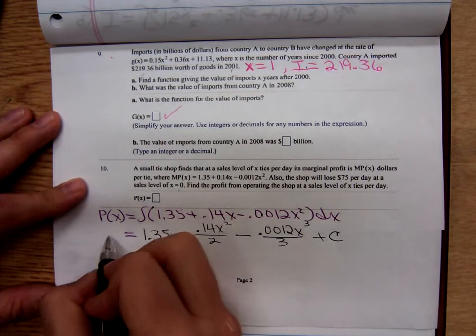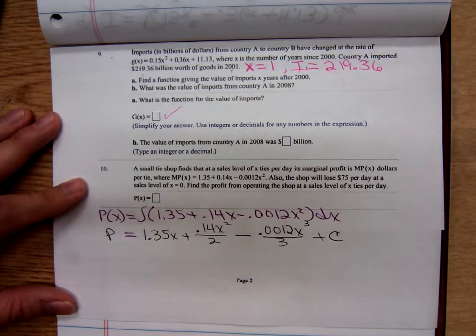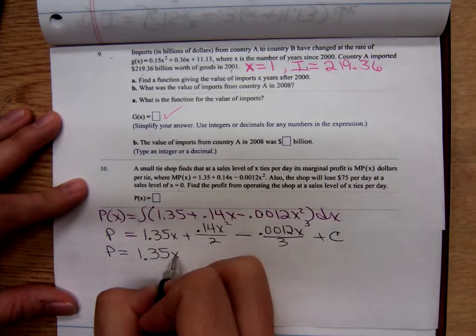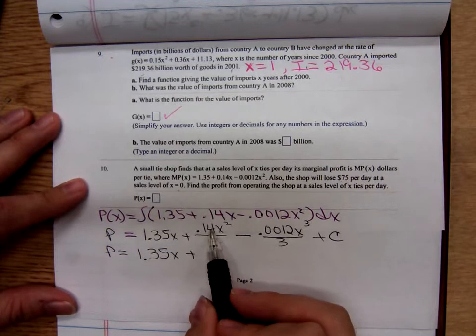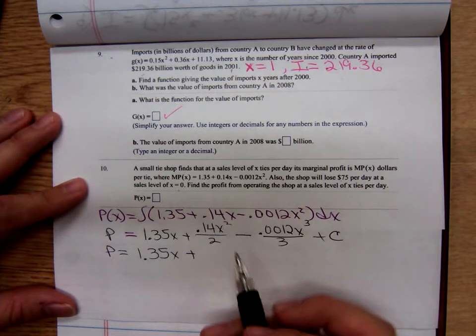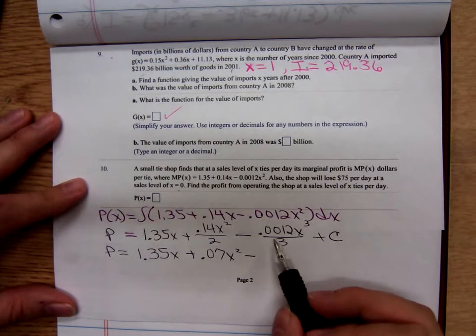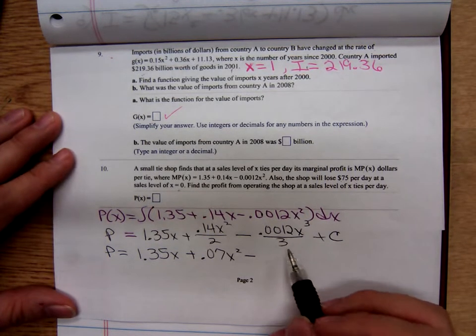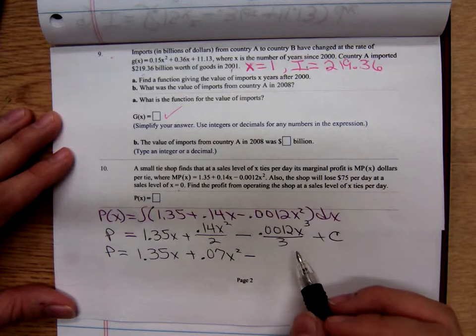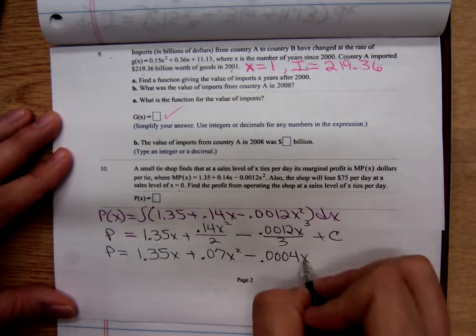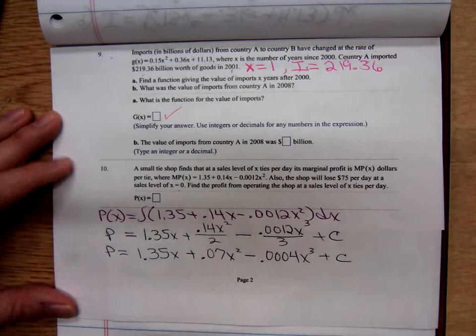So there's my profit function, and we can clean it up a little bit. That's 1.35x plus 0.14 divided by 2, that's 0.07x squared, minus 0.0012 divided by 3, is that 0.0004? And I'll check my minimal arithmetic here. Plus my constant C.